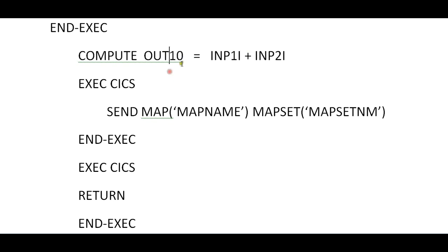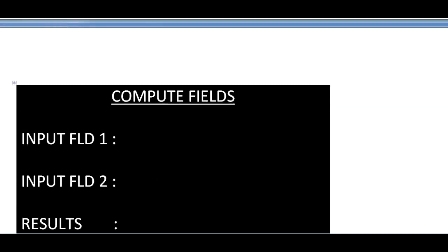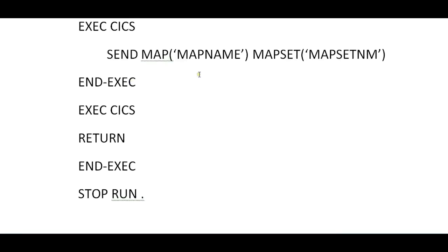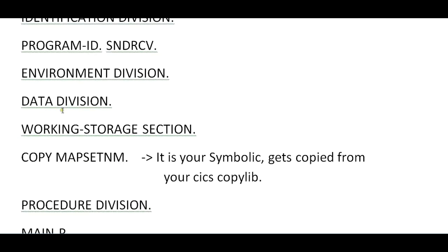The input values received in input field one and input field two will be added and stored into the output variable — let's call it OUT-ONE-ZERO. Now I have the results stored. What I do next is send the map again with map name and map set name. The data values you entered remain the same and the results get populated. Finally, RETURN releases the resources occupied while displaying the screen.